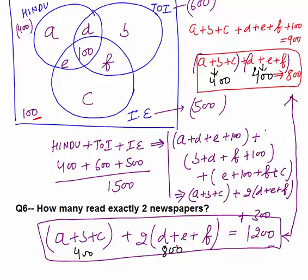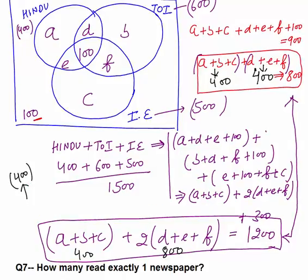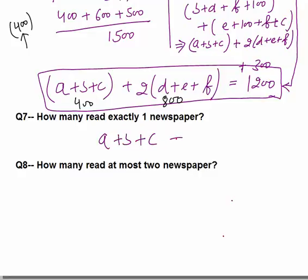Question 6: How many read exactly 2 newspapers? That is D + E + F = 400. Question 7: How many read exactly 1 newspaper? That is A + B + C = 400.